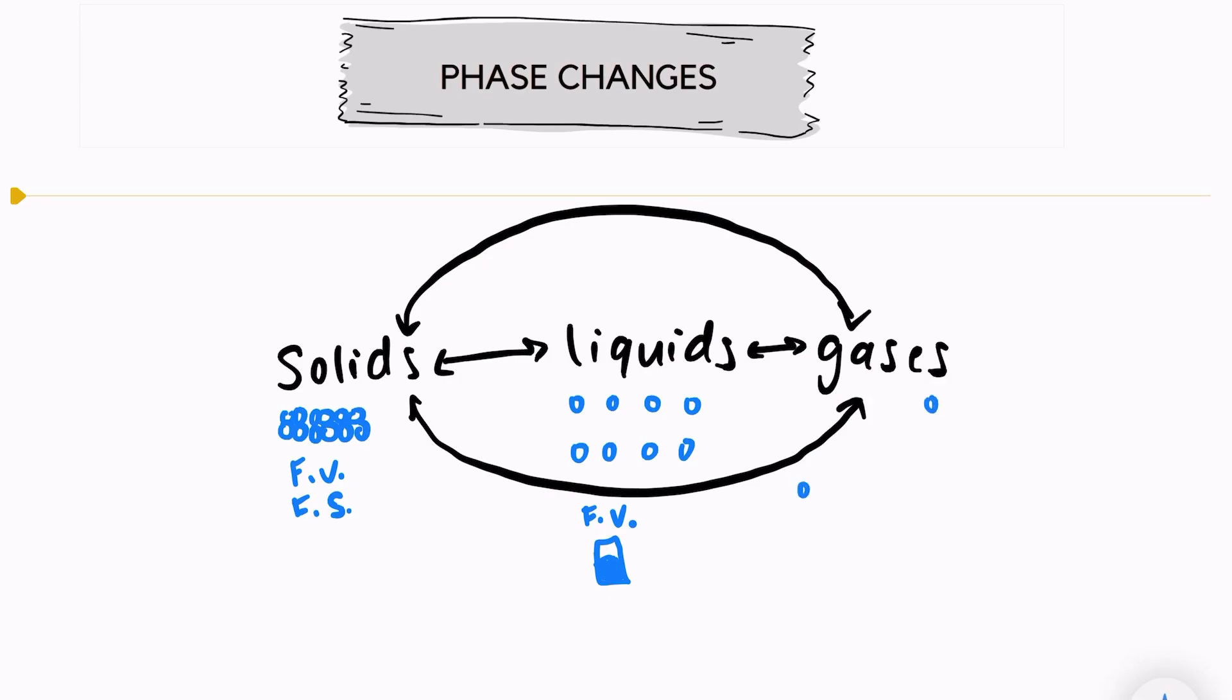And then gases are very spread out. They're also moving very quickly, and they have no fixed shape and no fixed volume. They take the shape and the volume of their container.